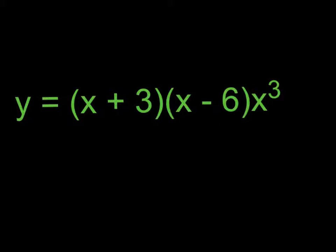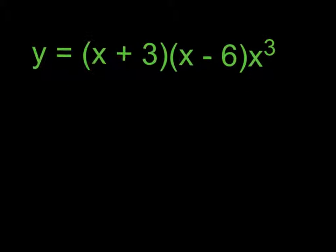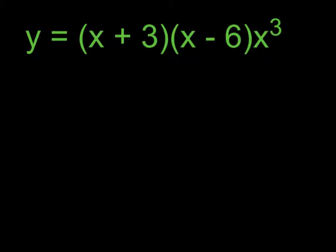If we are going to graph this polynomial, we first want to think about the basic shape it's going to take. We can see pretty clearly that this is going to be a fifth-degree polynomial, and so we immediately know that the basic shape of that polynomial is going to look something like that.